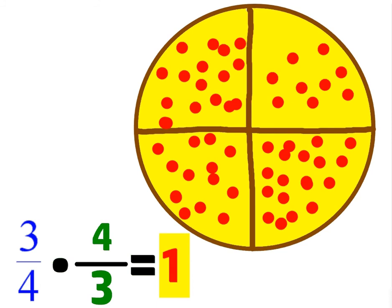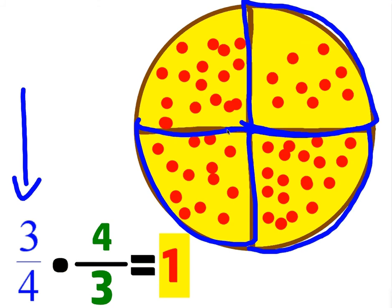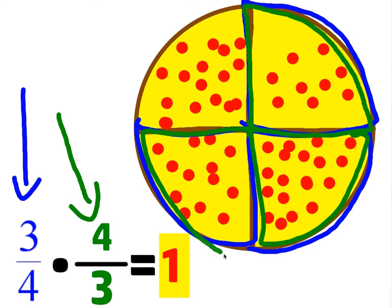Let's look at another example. If I start with 3 fourths of a pizza — here's 1 fourth, here's 2 fourths, and here's 3 fourths. What number must I multiply to end up with 1? We're actually going to multiply by the flipped version of 3 fourths, which is 4 thirds. A third of the 3 fourths would just be this piece, which is actually a fourth. But if I do all four of those — 1, 2, 3, 4 thirds — I end up with the whole pizza again.